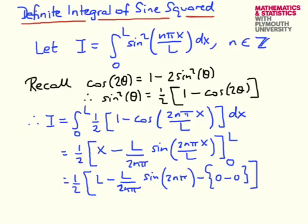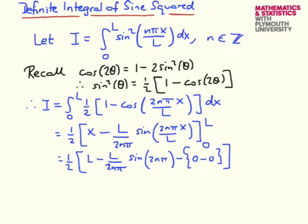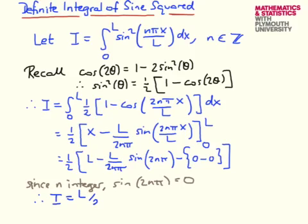So I'll just pause a moment and make a little bit of room. So since n is integer, sine of 2nπ vanishes. And this tells us that our integral is L divided by 2, and this is our final result for this integral.